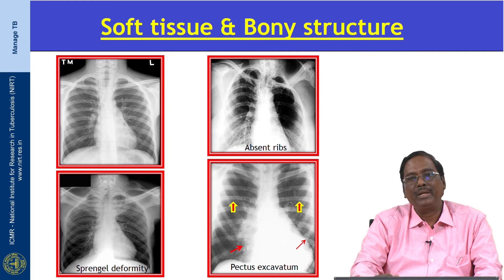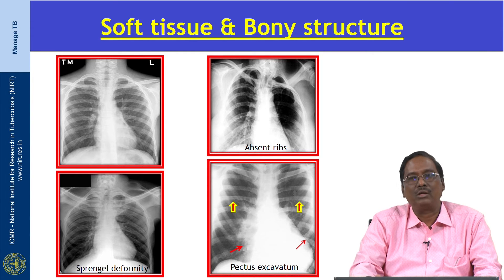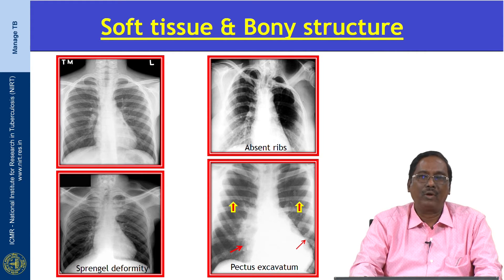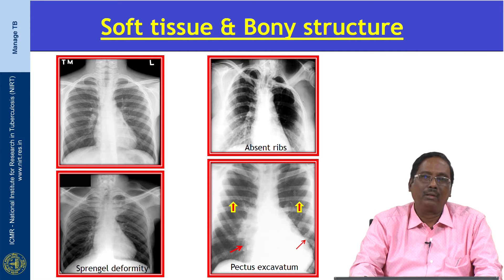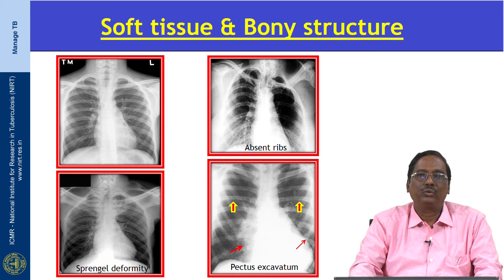After verifying the quality of the X-ray, we have to start interpreting the findings. First, we have to concentrate on the soft tissue and bony structures. We have to look for any bony abnormality, checking the ribs, clavicle, and scapula.